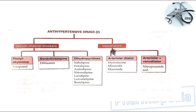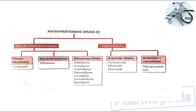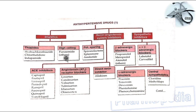Diuretics are further classified into thiazide diuretics, high ceiling diuretics, and potassium-sparing diuretics. RAS system inhibitors are classified into ACE inhibitors, angiotensin receptor blockers, and direct renin inhibitors. Sympathetic inhibitors are classified into four subtypes: beta adrenergic blockers, alpha plus beta adrenergic blockers, alpha adrenergic blockers, and central sympatholytics. Calcium channel blockers are classified into phenylalkylamine, benzothiazepine, and dihydropyridine derivatives. Vasodilators are classified into arteriolar and mixed dilators.